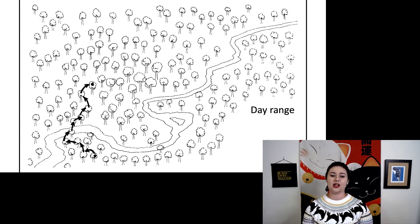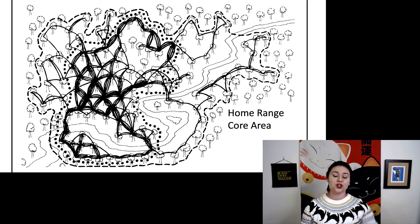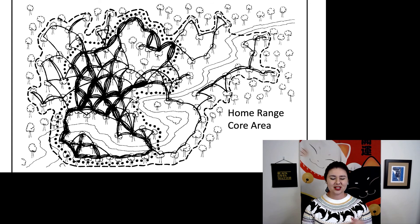Here is our day range. You can just map this is the path this primate took. Now, if we take a bunch of different day ranges, we might end up with something like this. So all of that, that is the home range. But you notice that some of that is used a lot more than the rest, and there is our core area. And if that is defended by that population, we would call that a territory.